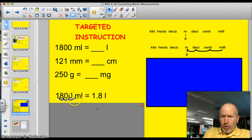So here's my decimal point over here, 1,800. So I'm going to make 3 jumps to the left. 1, 2, 3, giving me 1.800, or just 1.8 liters. Good job.